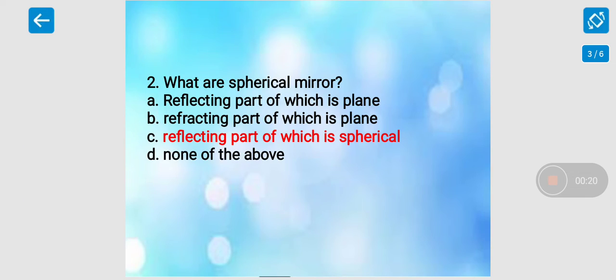Second question: What are spherical mirrors? Option A: reflecting part of which is plane. Option B: refracting part of which is plane. Option C: reflecting part of which is spherical. Option D: none of the above. So our correct answer is option C, reflecting part of which is spherical.